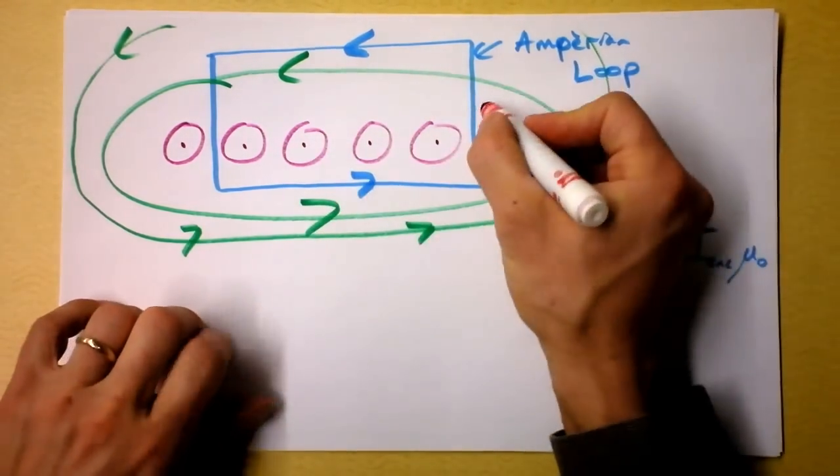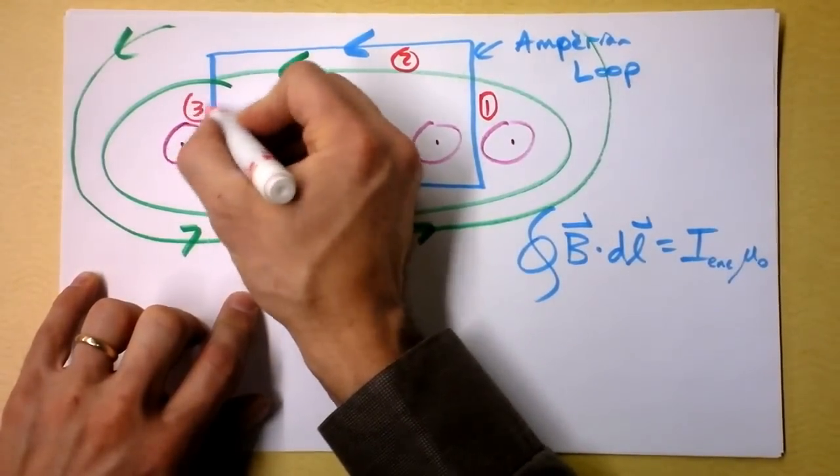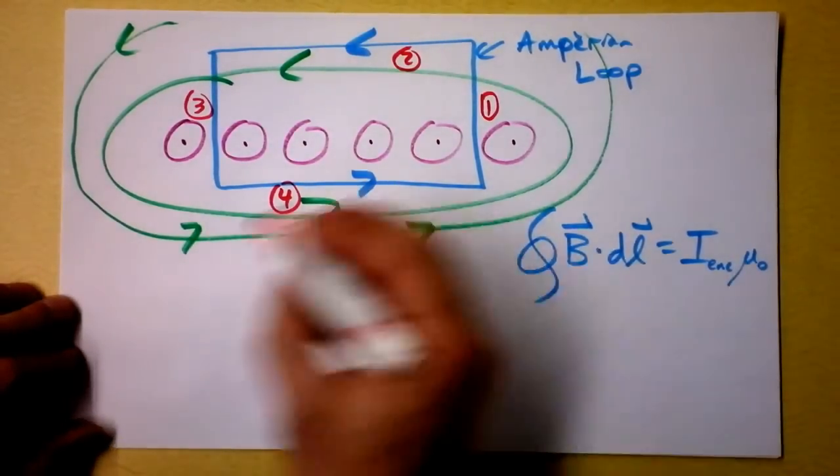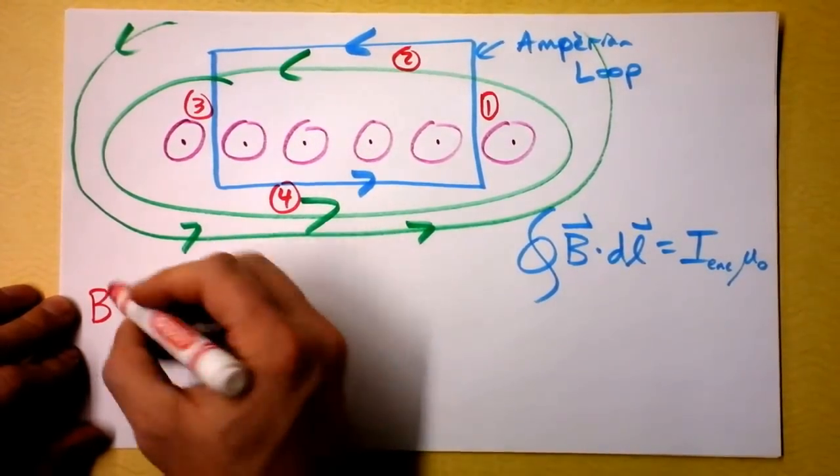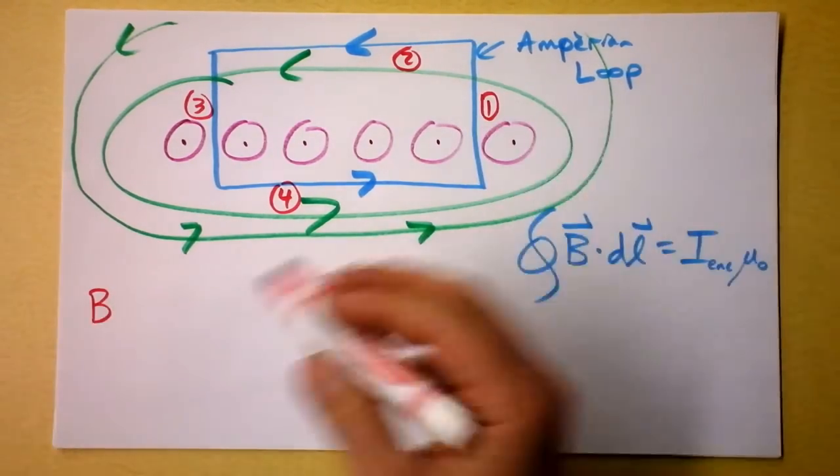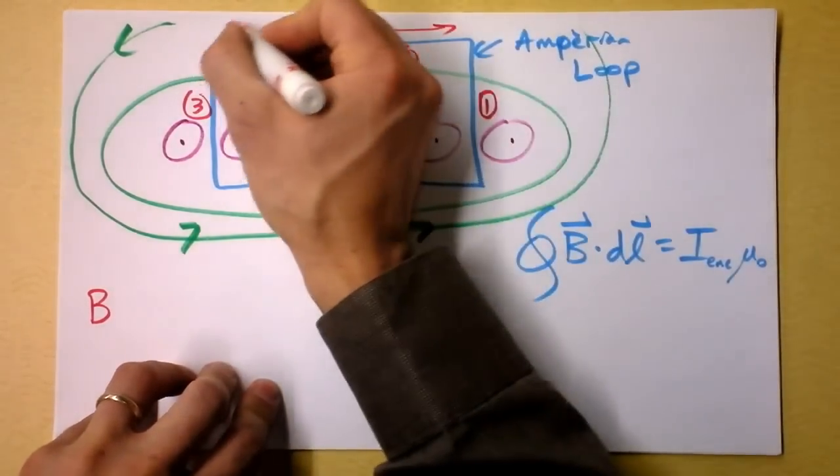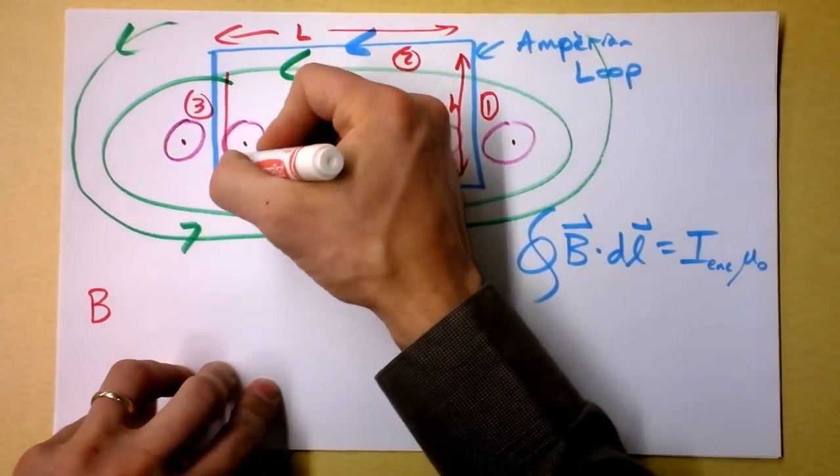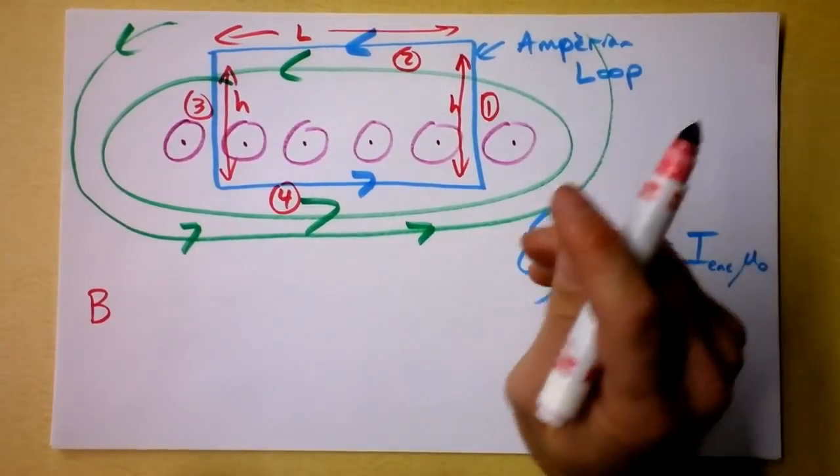I'm going to call this section one, and this section two, and this section three, and this guy will be section four. And I know by this equation that the magnetic field times the length, let's define some lengths here. Let's say that this is length L, and this might be length H. Turns out that H is not going to affect us at all. We can make H arbitrarily large.